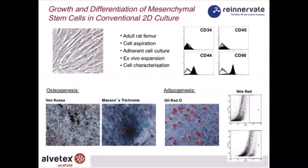We can characterize those cells readily using standard methodologies including flow cytometry to look at cell surface markers. For example, CD44 and CD90 are present, whereas CD34 and CD45 are absent. We can also follow very standard methods to induce differentiation of MSCs into bone or fat — osteogenesis and adipogenesis, respectively. Along the bottom you can see photographs showing Von Kossa staining and Mallory's trichrome as evidence of bone differentiation, and with Oil Red O, lipid droplets forming in vesicles. This can also be performed by flow cytometry.